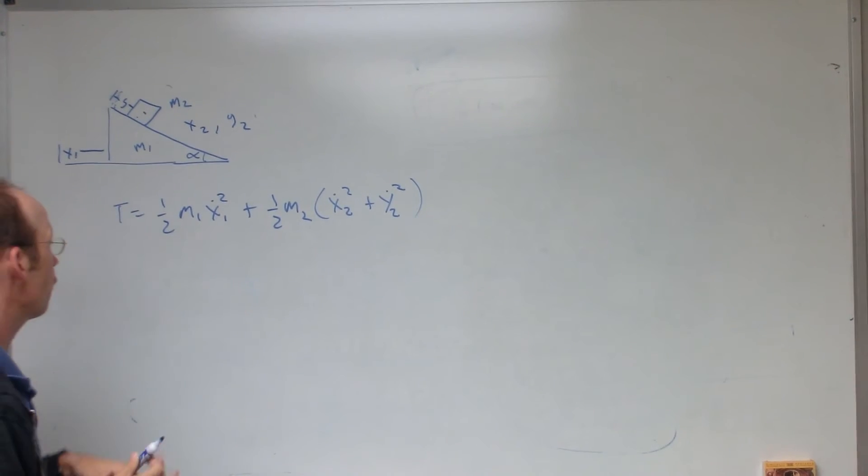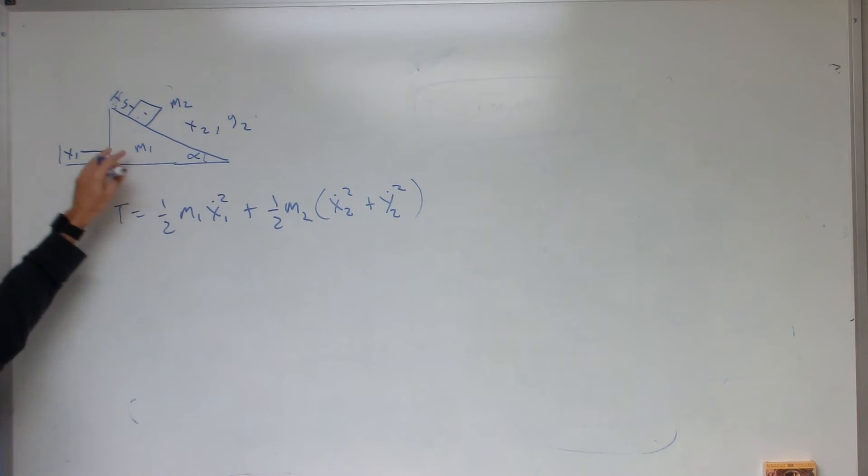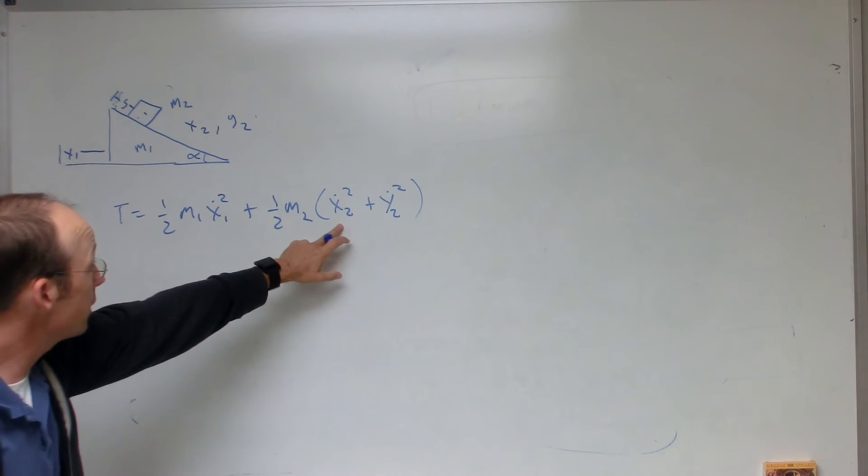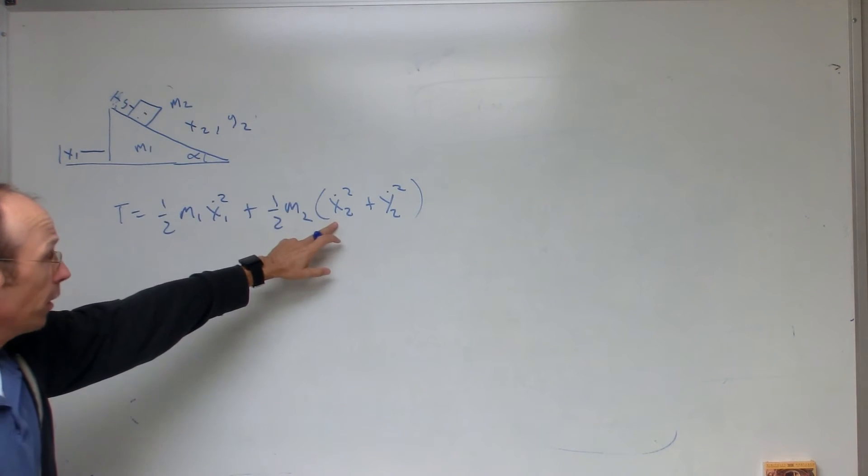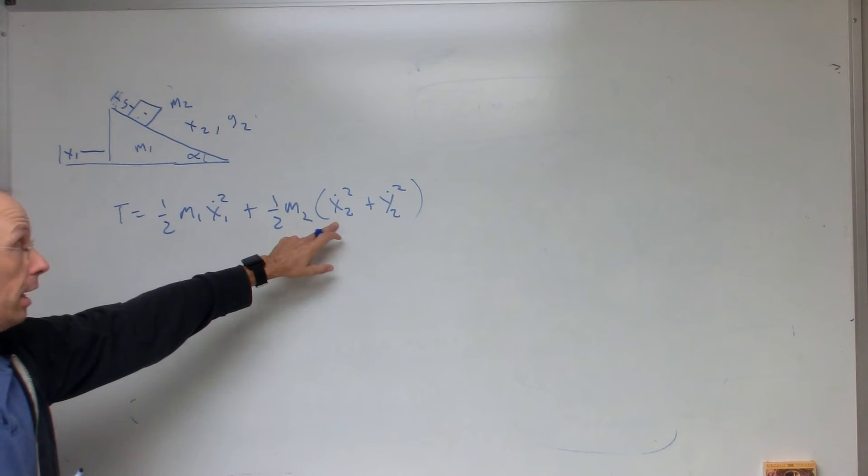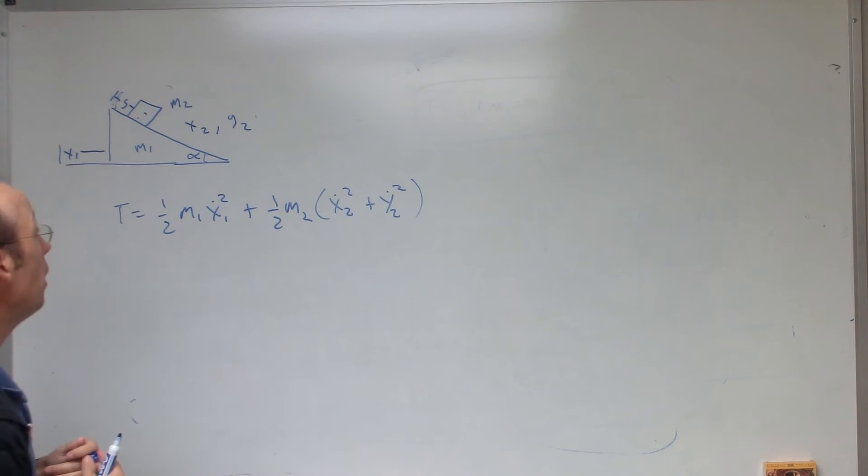This first term, this is just 1 half m1 x dot squared. This one's just moving in the x direction, so that's simple. This block is moving in both the x and the y direction. That's its x and y coordinate.